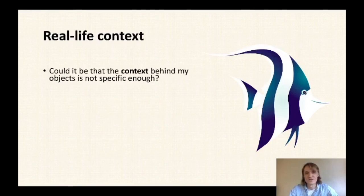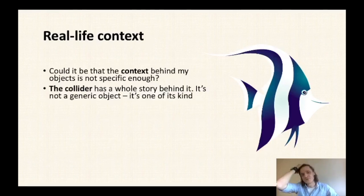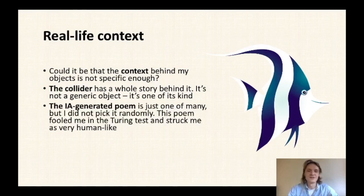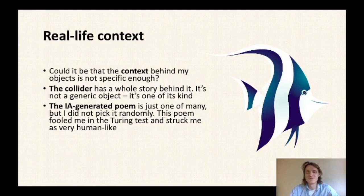Could the context behind my objects be not specific enough? Looking at the Collider — it's not just a generic particle accelerator. It's one of a kind, the largest machine in the world, and one whose design was heavily associated with the search for the Higgs boson and instrumental in supporting the standard model of particle physics. The AI-generated poem is also not just one of many poems I could have found online — it was taken from a website where I tested whether a computer could fool me into believing certain poems were written by human beings.